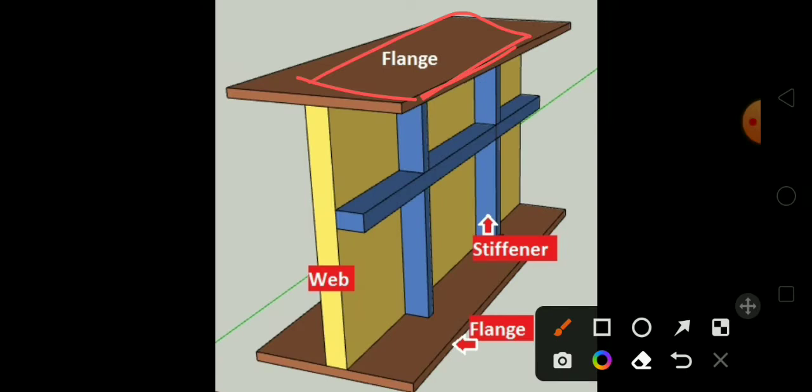This is the flange, okay, and the bottom part is also the flange. So top and bottom is connected with the flange and between these two top and bottom flange is joined by the web. Okay, so this is the web, you can see this is the web.